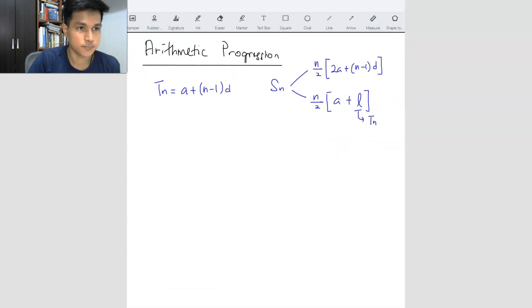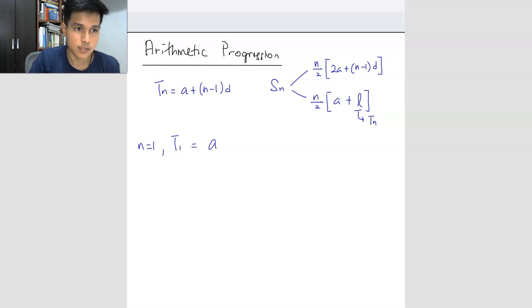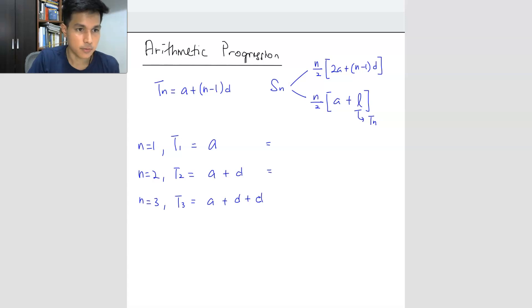Let's start with the first one, TN. TN is quite straightforward. We start with the first term first. What is T1? When N equals 1, the first term is A — you don't have to add any D value, so it's 0D. When N equals 2, the second term will be A plus D. When N equals 3, the third term will be A plus D plus D. So you can actually see a pattern here.